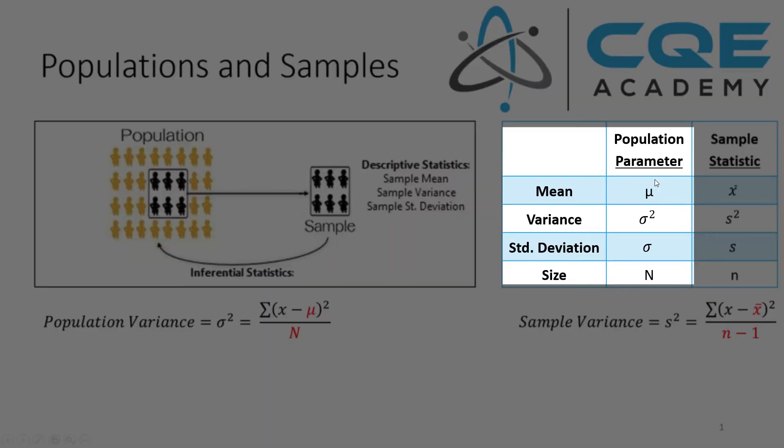Anytime we're talking about a population of data, the mean value is characterized by mu, the variance is denoted as sigma squared, the standard deviation is just called sigma, and the size of the population is denoted by the big letter N.